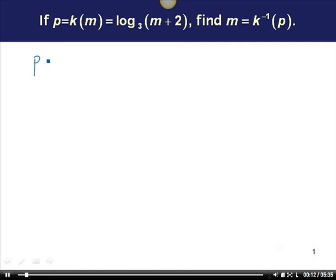I'm going to start with my log equation, p equals log base 3 of the quantity m plus 2. I need to solve this equation for m. I have a base 3 logarithm, so my exponential is going to be base 3 as well. The logarithm is equal to the exponent, so my exponent is p. 3 to the p equals m plus 2.